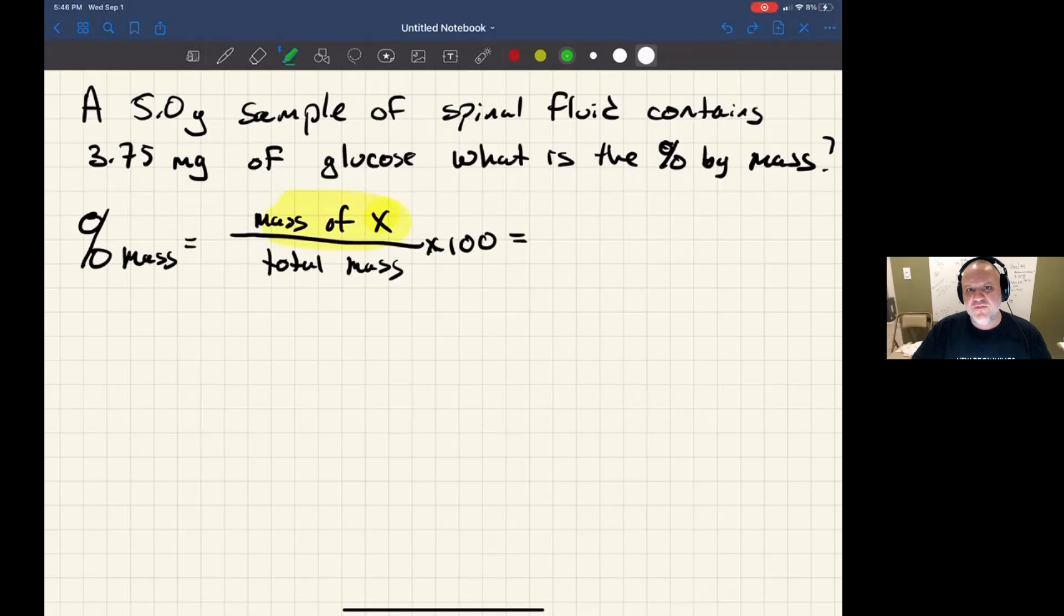Like before, it was just the mass of the element. In this case, it's going to be the mass of the glucose. These two masses have to be in the same units, but I'm giving you milligrams and grams, so you have to convert one of the units into the other one.